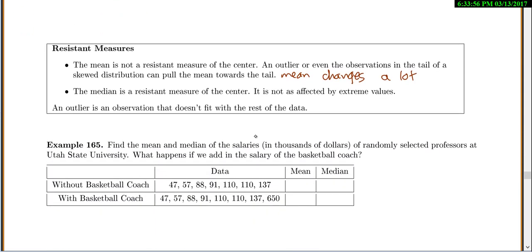So in this next example, take two minutes and find the mean and median for these two different data sets. These are the data sets of salaries of randomly selected professors. And then I added in the basketball coach. So find the mean and median, and we'll compare them. So without the basketball coach, you should have got a mean of 91.4, and for your median, 91 is right there in the middle. And notice our mean and median seem pretty close.